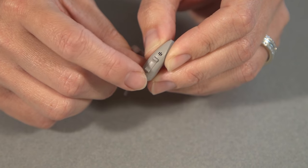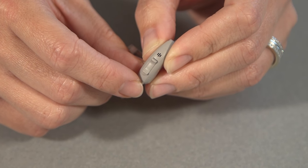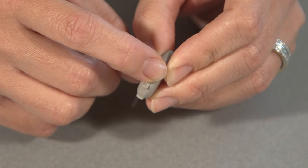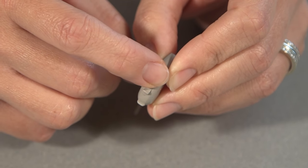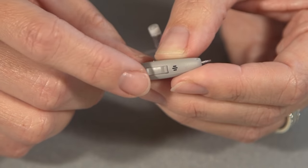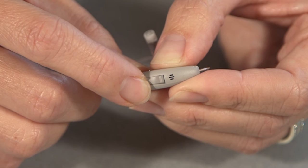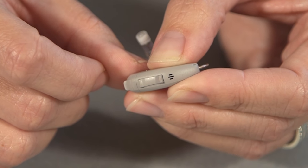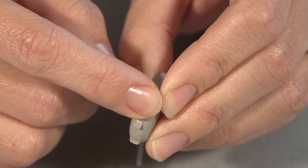This hearing aid has what we call a rocker switch and it can be programmed to function in multiple ways. So if it's used as a volume control, the user just does a short press down to decrease the volume or a short press up to increase the volume.